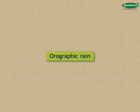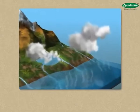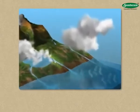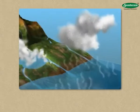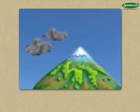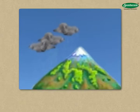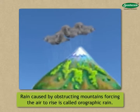Orographic Rain. Winds coming from over the sea or large water bodies contain plenty of vapour. They are obstructed by high mountain ranges and rise upward. Due to the low temperature at the high altitude, the vapour in the air condenses and it rains. Rain caused by obstructing mountains forcing the air to rise is called orographic rain.